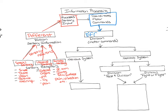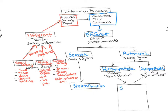The efferent division includes both the somatic nervous system and the autonomic nervous system. The somatic nervous system issues commands to skeletal muscles, which then contract. The autonomic nervous system issues commands through either the parasympathetic division — the rest and digest division — or the sympathetic division, the fight or flight division. Both send commands to effectors including smooth muscles, cardiac muscles, glands, and adipose tissue.